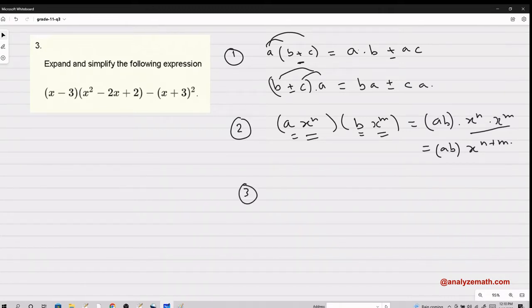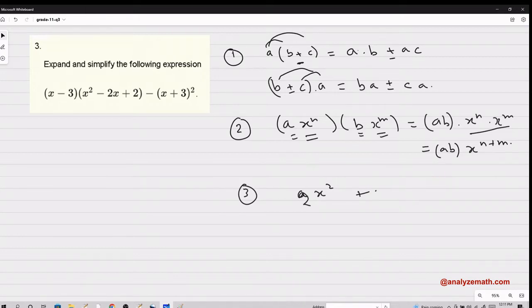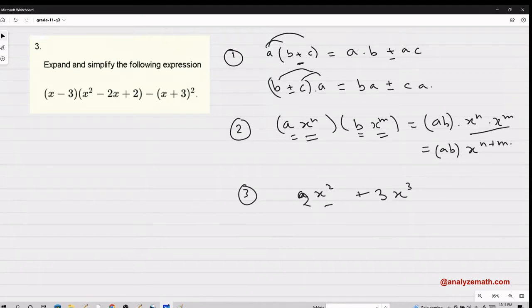The third idea is when you add, subtract, or group monomials. You can only group monomials with the same letters to the same power. For example, 2x² plus 3x³, here I cannot simplify because the powers are different. This is x², and this is x³.